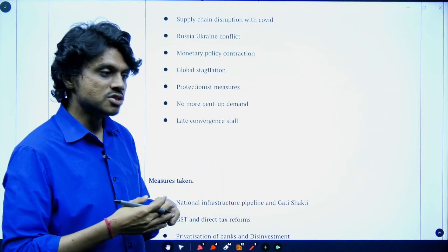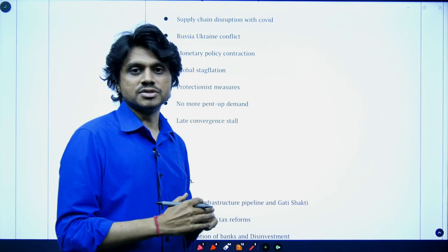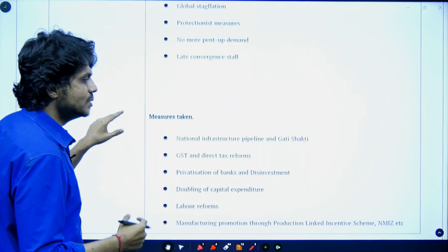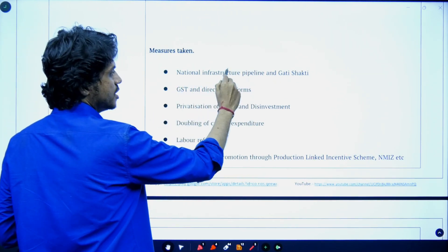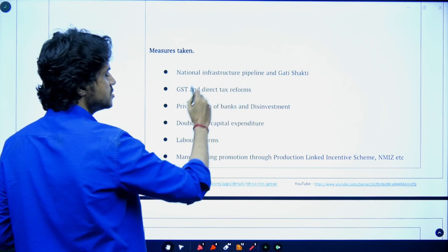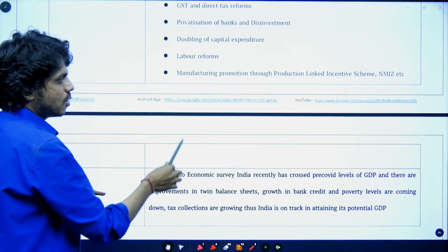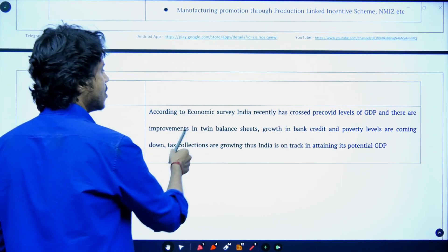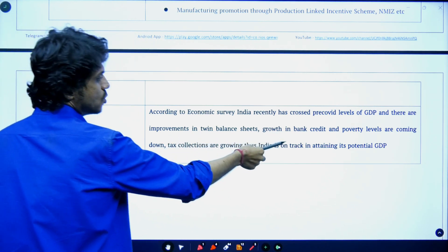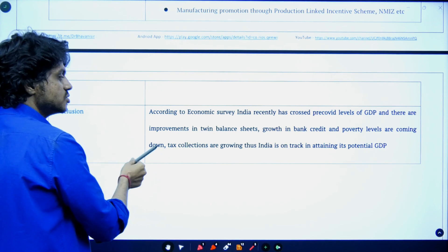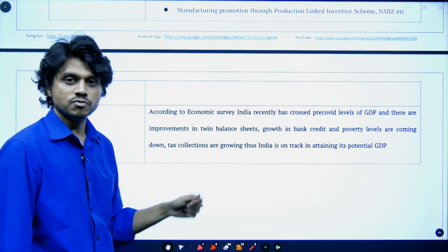To break out of this, the government has taken measures such as the National Infrastructure Pipeline worth 116 lakh crores. Various measures are expected to promote GDP. According to the economic survey, India has recently crossed pre-COVID levels of GDP. There are improvements in twin balance sheets, growth in bank credit, poverty levels are coming down, and tax collections are growing. Thus, India is on track to attain its potential GDP — and that could be a good futuristic conclusion.